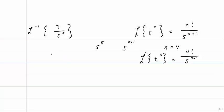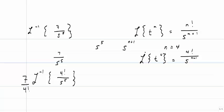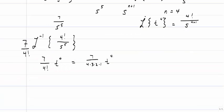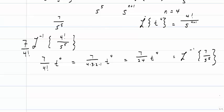What I have is 7 over s^5, so I'll rewrite it by pulling out the 7 using linearity and multiplying and dividing by 4 factorial. Now I know the inverse Laplace of the expression in braces, and with 7 divided by 4 factorial out front, the inverse Laplace transform of 7 over s^5 is 7 divided by 24 times t to the 4th.